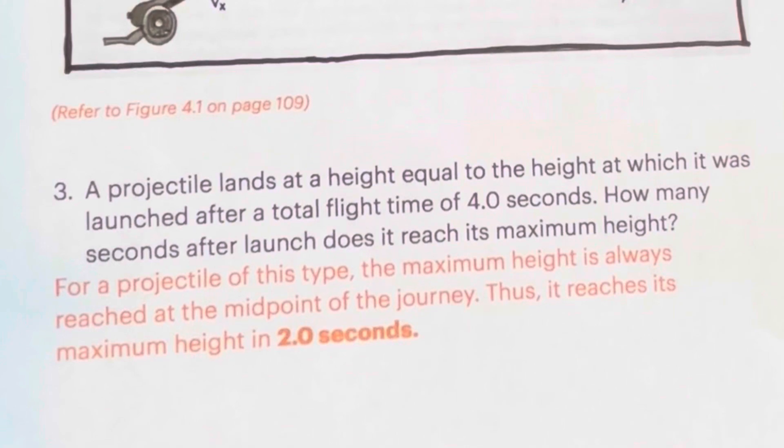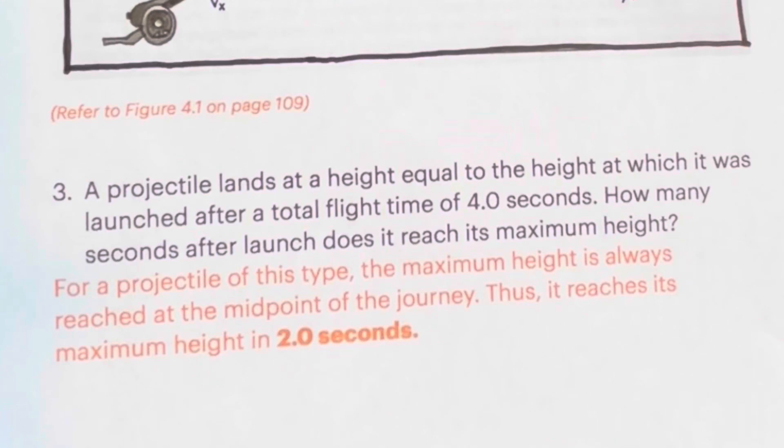Question number 3: A projectile lands at a height equal to the height at which it was launched after a total flight of 4 seconds. How many seconds after launch does it reach its maximum height? For a projectile of this type, the maximum height is always reached at the midpoint of the journey. Thus, it reaches its maximum height in 2 seconds.